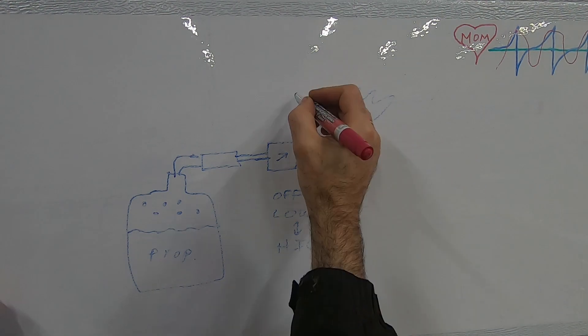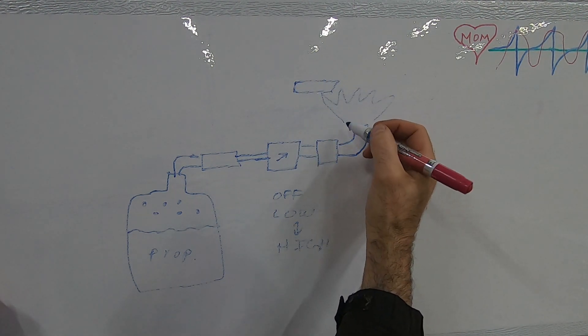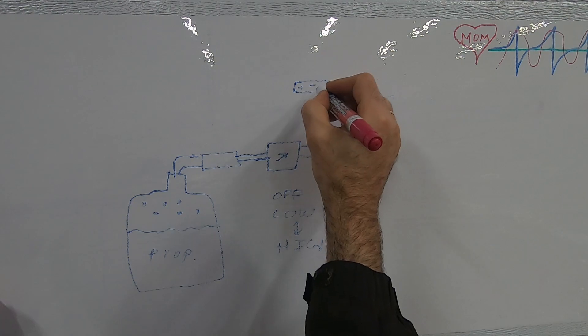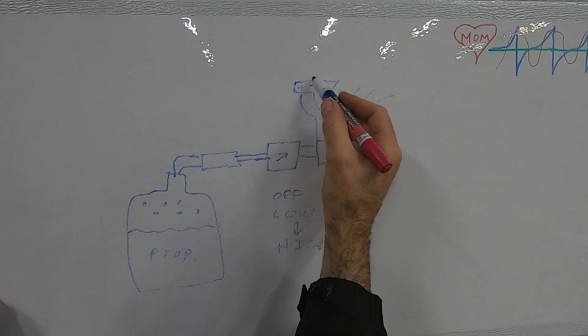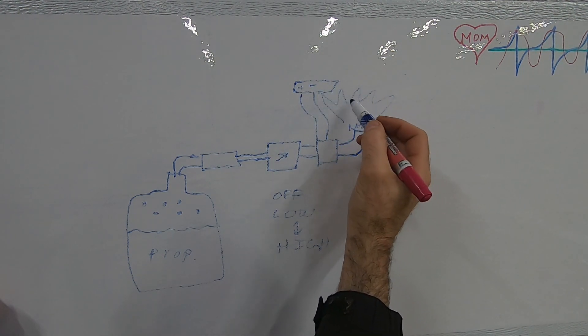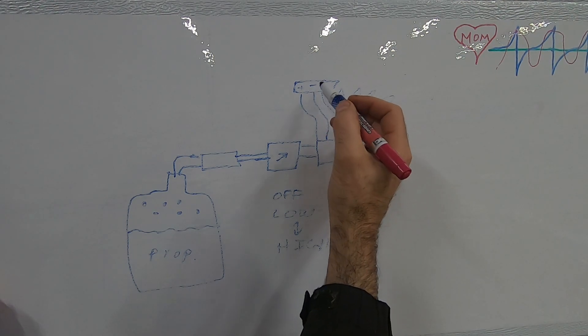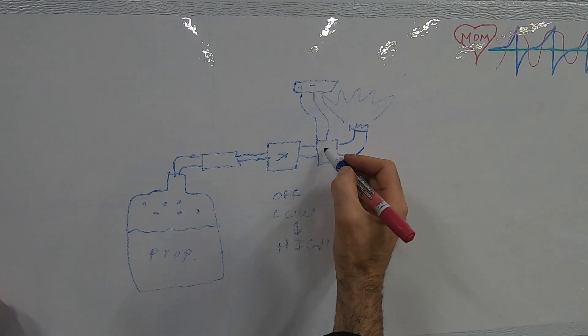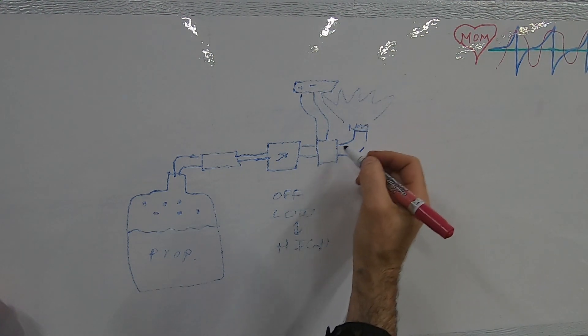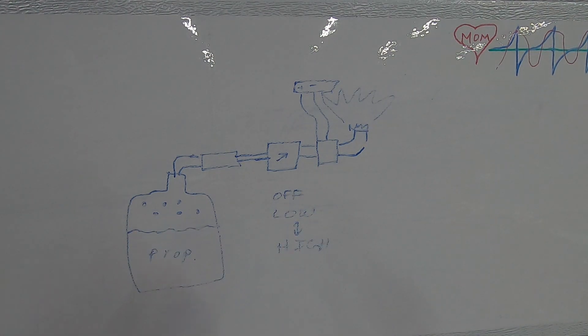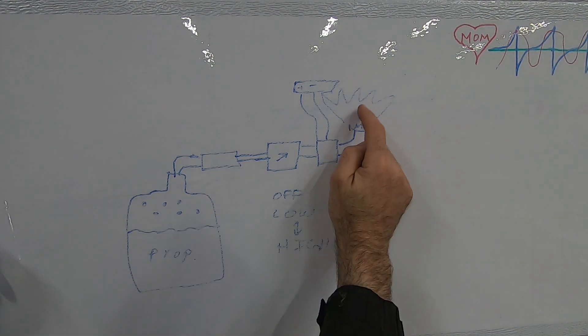But there's something called a thermocouple that creates a positive and a minus charge only when the thermocouple is hot. So when there's a flame against the thermocouple, it creates this positive charge and it will open the valve and allow propane to flow. And you might be wondering, how does the flame ignite and get this thing hot if it's blocked here?